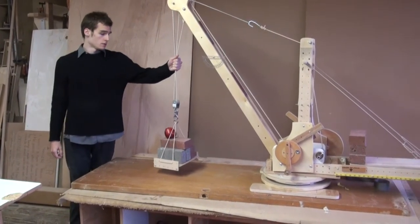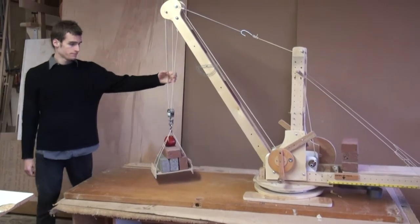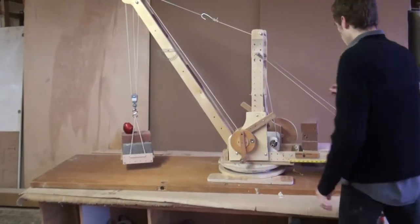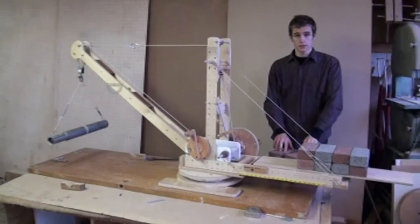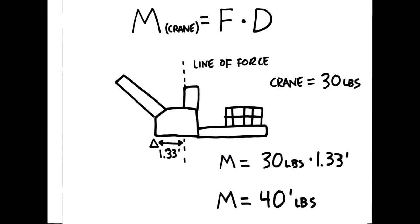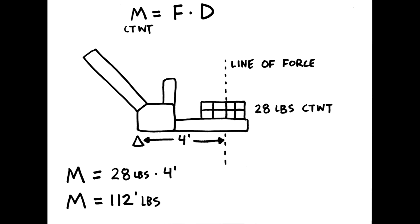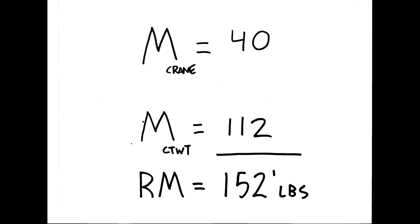Here's an example. The overturning moment is 50 foot pounds. So we need 75 foot pounds of righting moment. Now we lowered the boom to 30 degrees and added a 28 pound counterweight. The righting moment is the sum of the moment of the crane and of the counterweight. And that's 152 foot pounds.